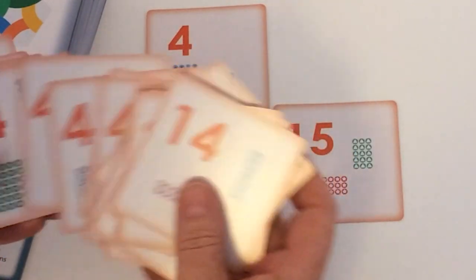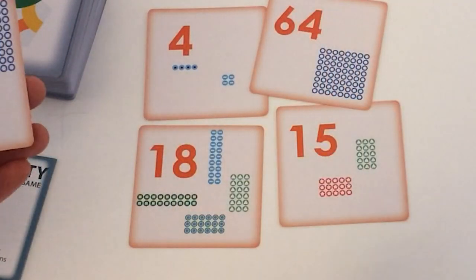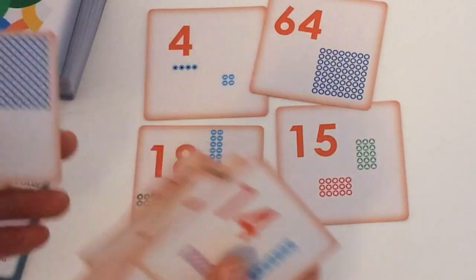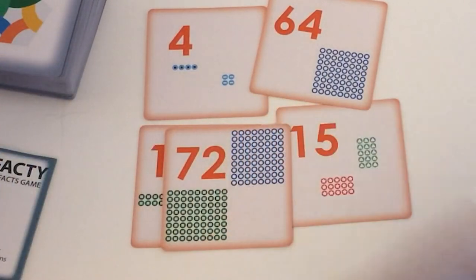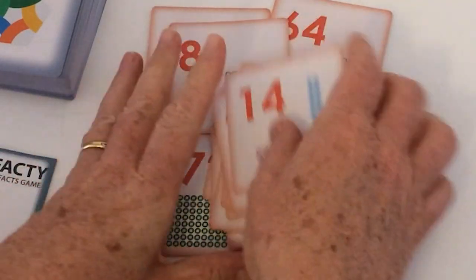And you can see it goes right up to 64 which is eight times eight, and you can see there it's only got the one array there. And then nine times eight, nine times nine.